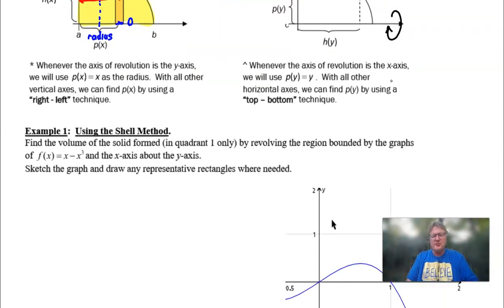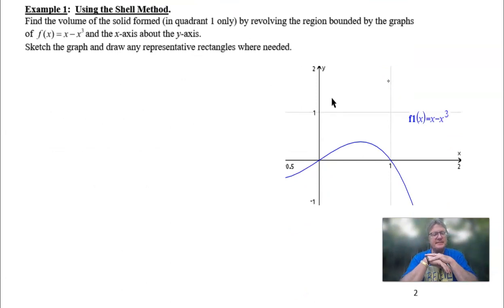Hopefully this is getting the ball rolling. Let's take a look at our first problem. It says, find the volume of the solid formed in quadrant one only by revolving the region bounded by the graphs of f(x) = x - x³ and the x-axis about the y-axis. The problem says to sketch the graph and draw any representative rectangles. I've gone ahead and used a graphing calculator to sketch this curve. The video is not about how to sketch that curve. You're not really needing a beautiful Rembrandt of the graph. All you need is just some kind of a sketch that you can draw your rectangle through and get your bearings.